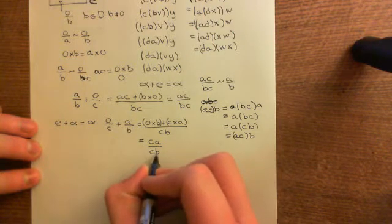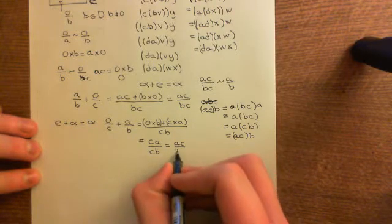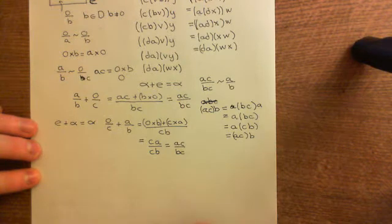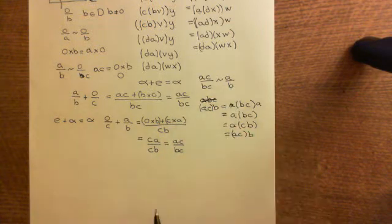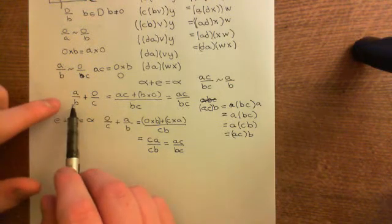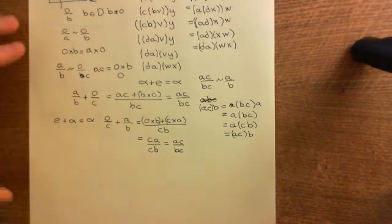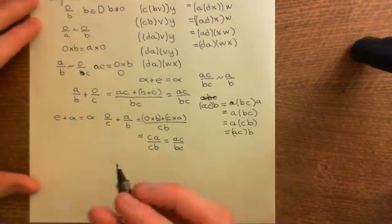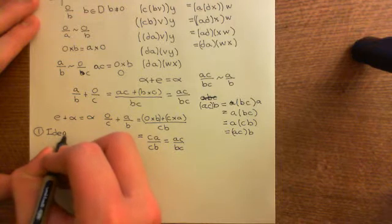We need to show that ca over cb is equivalent to a over b. This is true because ca over cb is the same as ac over bc, since the domain is commutative with respect to multiplication, and we've already shown that fraction is equivalent to a over b. So adding this identity equivalence class to any other equivalence class always gives back that original equivalence class. We have an identity — axiom one is proven.